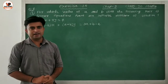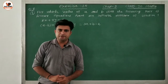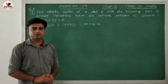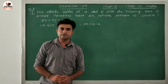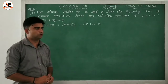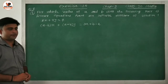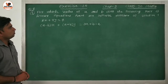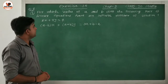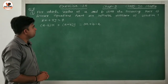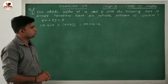Good morning viewer, welcome to my YouTube channel VP Academy. Today in this video we are going to see Exercise 3.2, Question 2. Question 2 mein sab se pahla, first number pe hai: For which value of A and B does the following pair of linear equations have an infinite number of solutions?